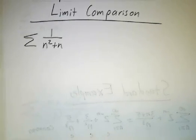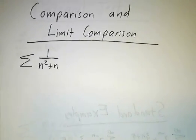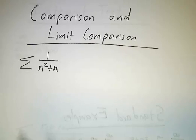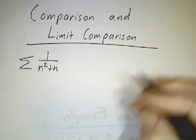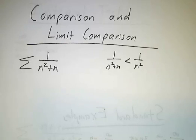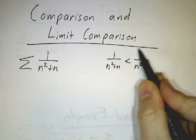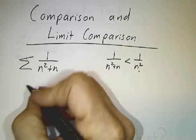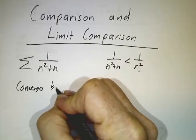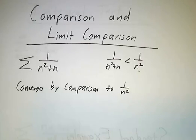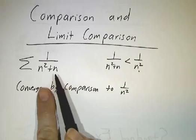Okay, now let's look at the comparison and the limit comparison tests. Here is where the geometric and the p series really shine, because they're the things that you always compare things to. If you have the sum of 1 over n squared plus n, you say, oh, 1 over n squared plus n is less than 1 over n squared. I mean, the numerator is bigger, so the ratio is smaller. And this is a p series. There's a p series with p equals 2. So this converges, so this converges. So this converges by comparison to 1 over n squared.